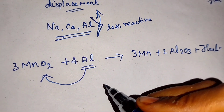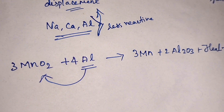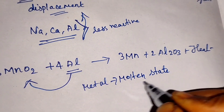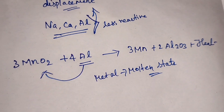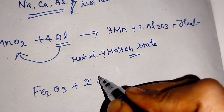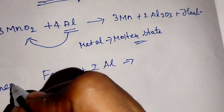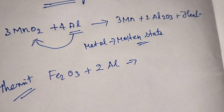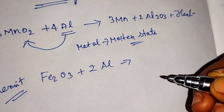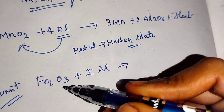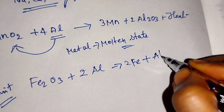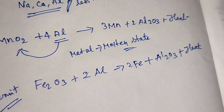Metals are produced using very high heat, so we get the metal in a molten state only because high heat is released. This is an exothermic reaction. For example, iron oxide reacting with aluminium - this reaction is known as the thermite reaction, because a high amount of heat is evolved. Iron is separated, aluminium oxide is formed, and high heat is produced. This reaction is used to join railway tracks and for repairing cracked machinery parts.